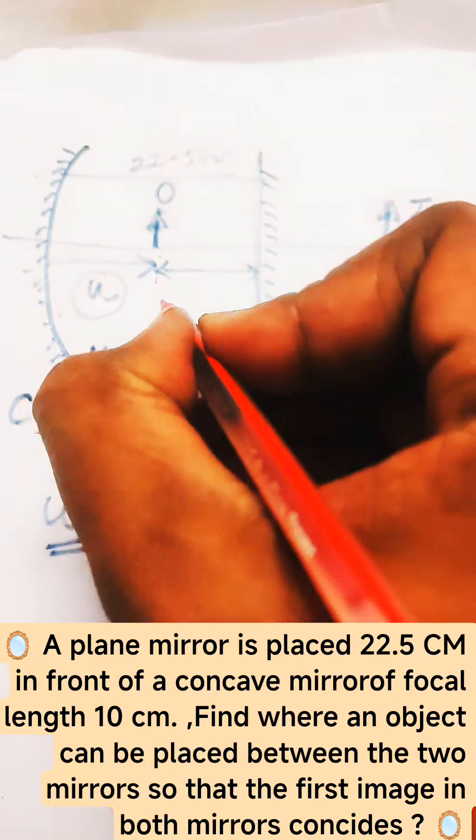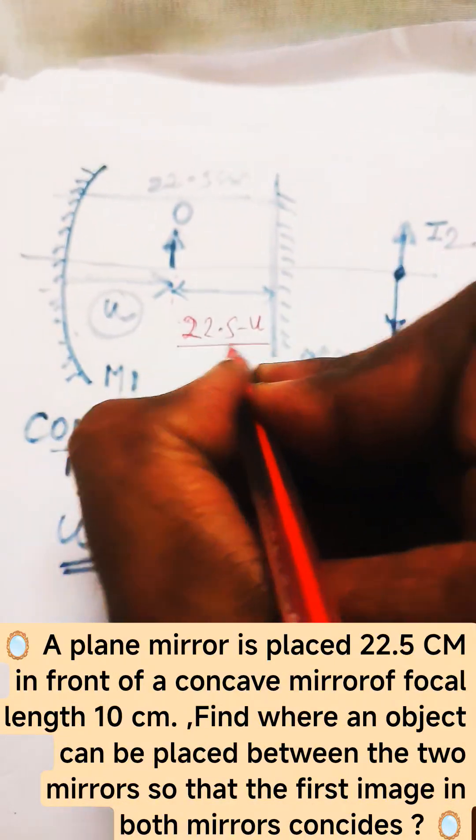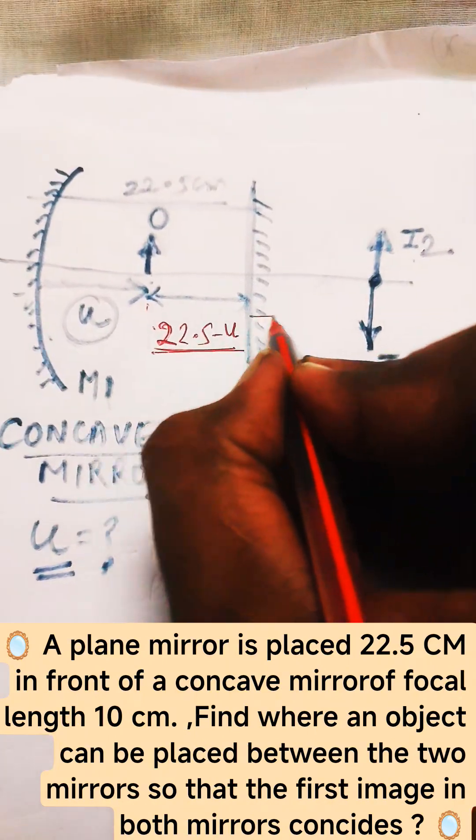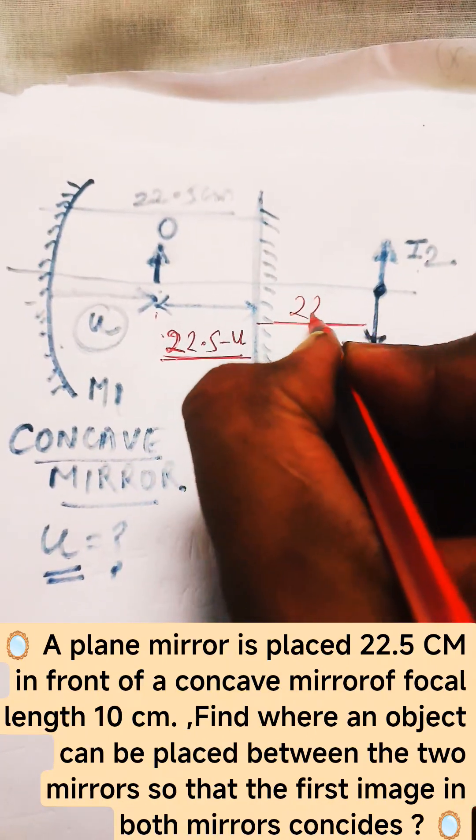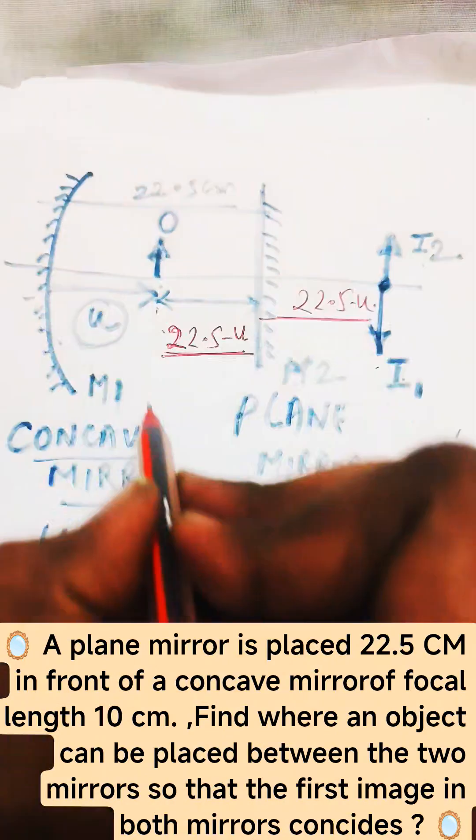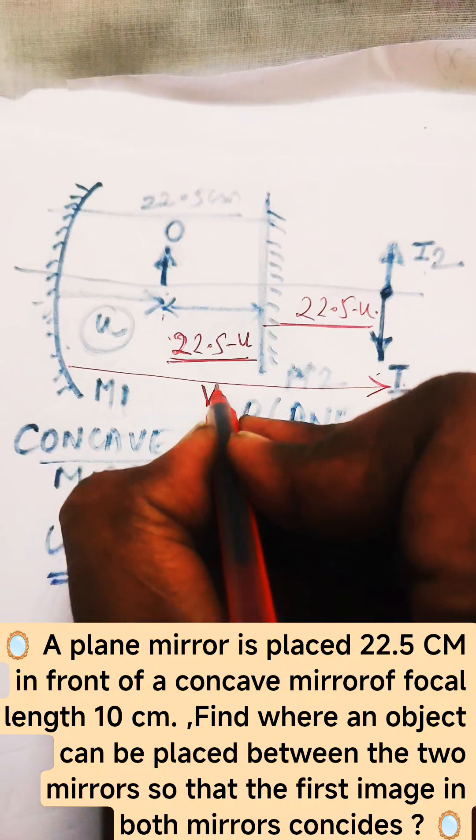is u, so this distance will be 22.5 minus u. Similarly, this image is formed just 22.5 behind the plane mirror, as usual. And this is the v, that is the image distance for